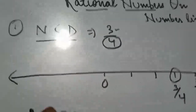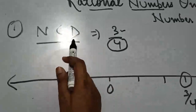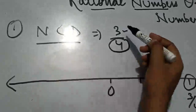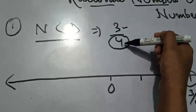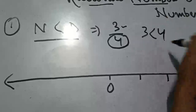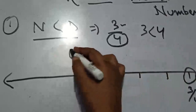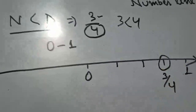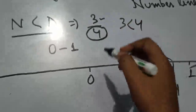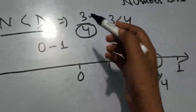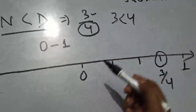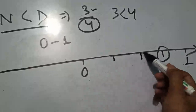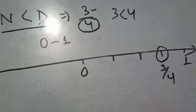Now, since the numerator is 3, we move 3 steps from zero: one, two, three. So what comes here is 3 by 4. Let's see clearly — when the numerator is smaller than the denominator, for example 3 and 4 where 3 is smaller than 4, the value lies between 0 and 1. We divided into 4 parts and moved 3 steps forward from 0. So this value is 3 by 4.